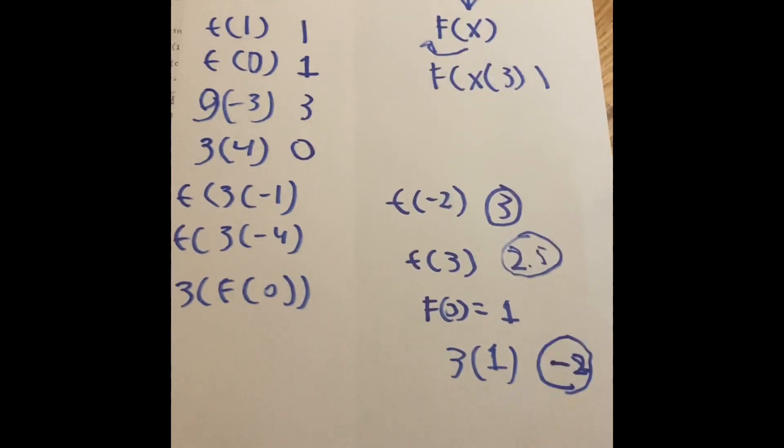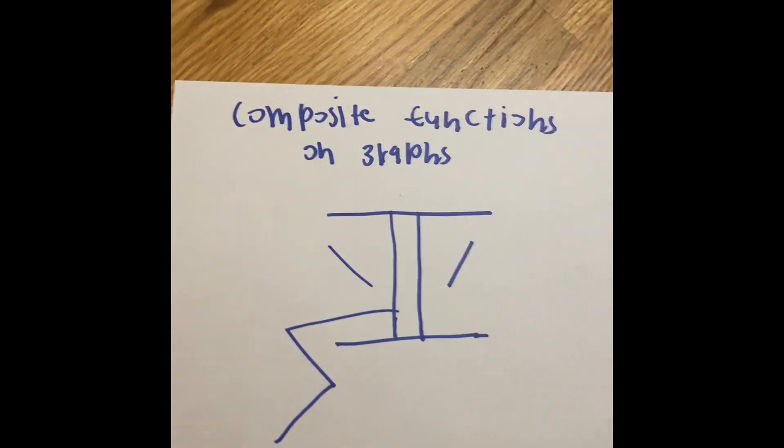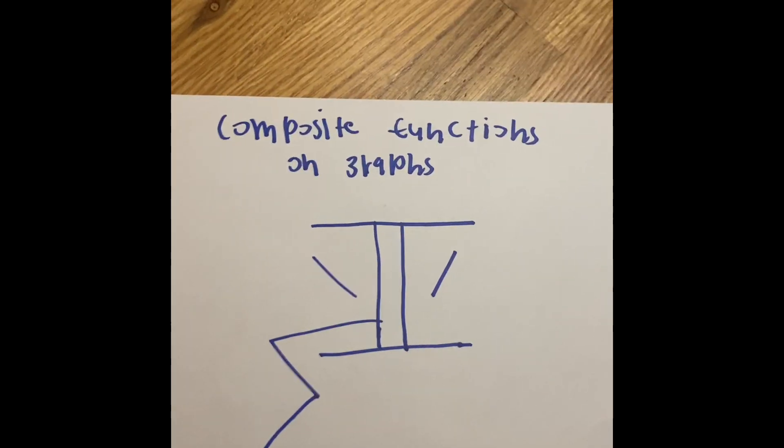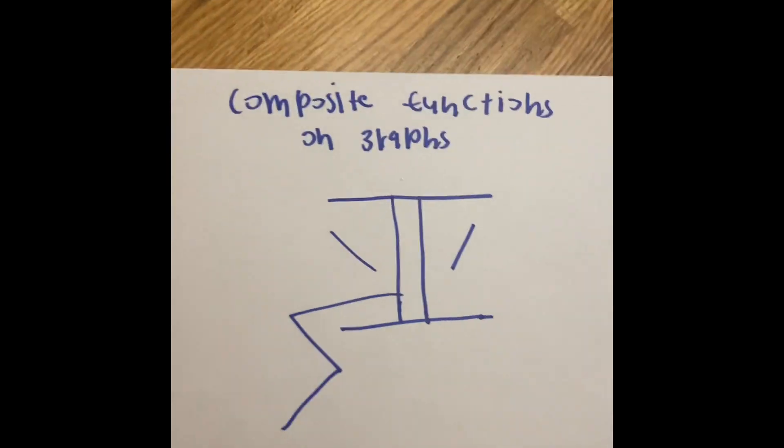So I hope this video has helped you understand this crazy graph, whatever it's called. And it's literally called composite functions on a graph. Thank you for watching Top of Your Life's Math Industry. Like and subscribe! Good night, guys.